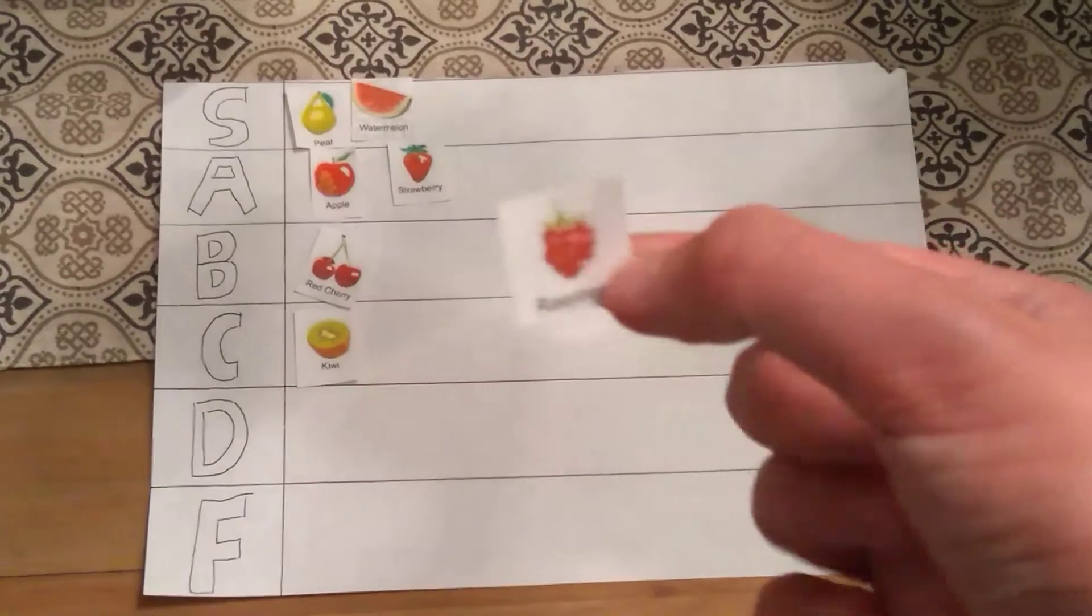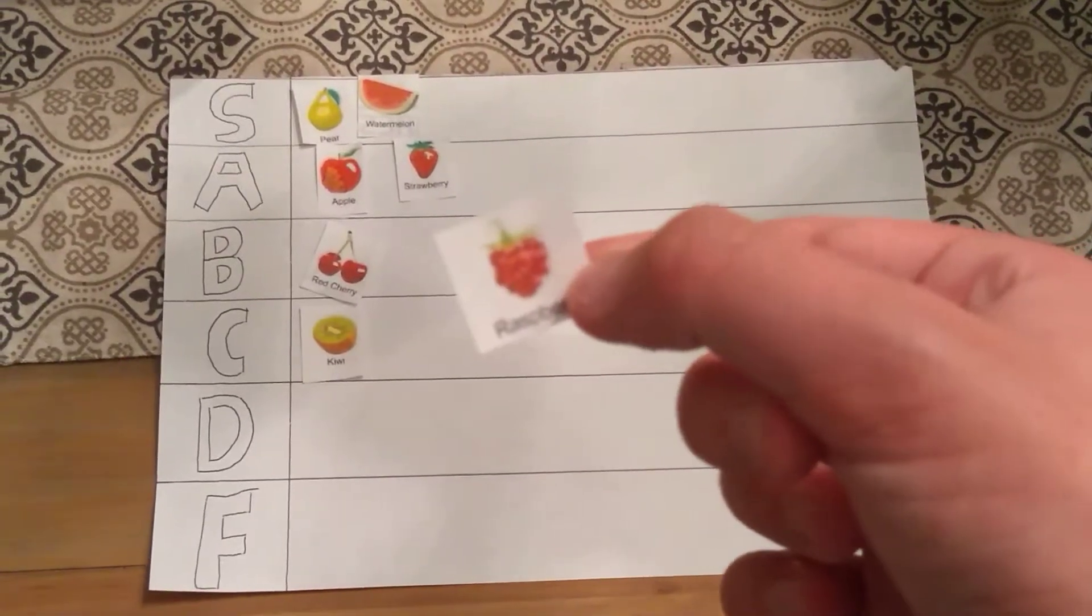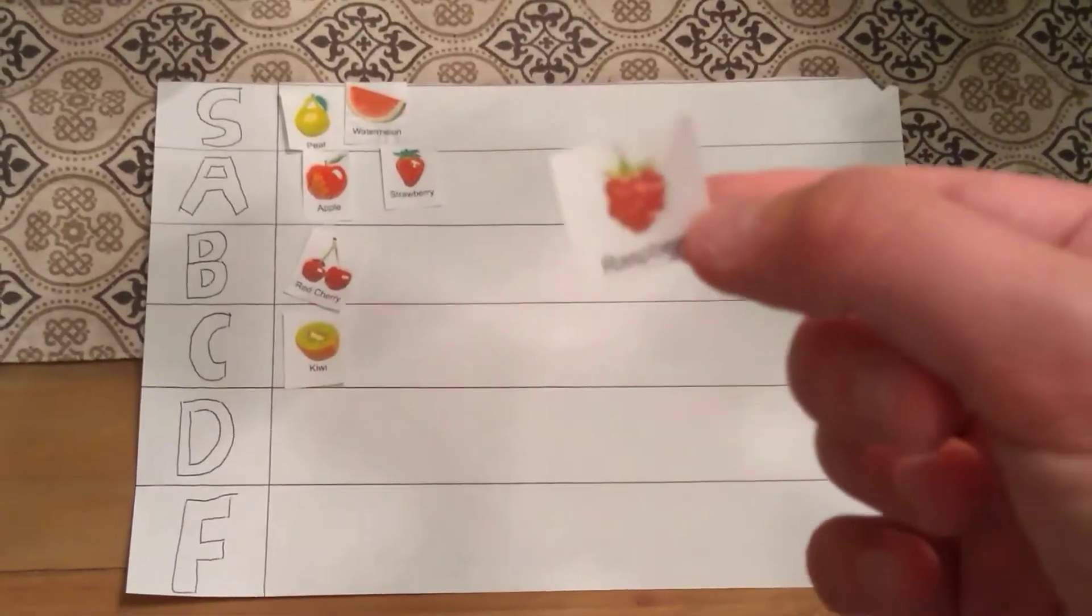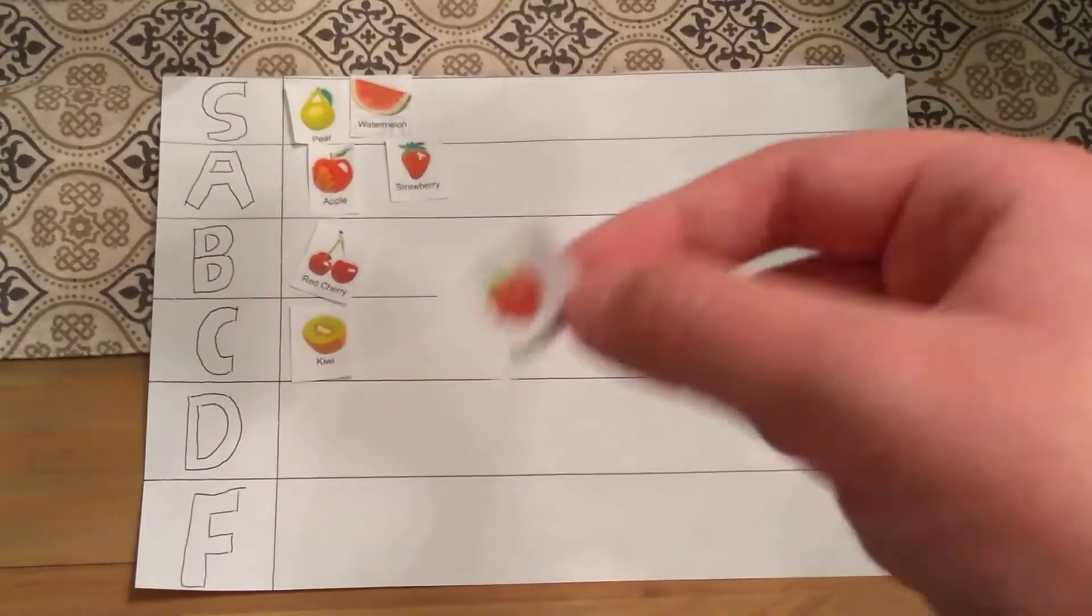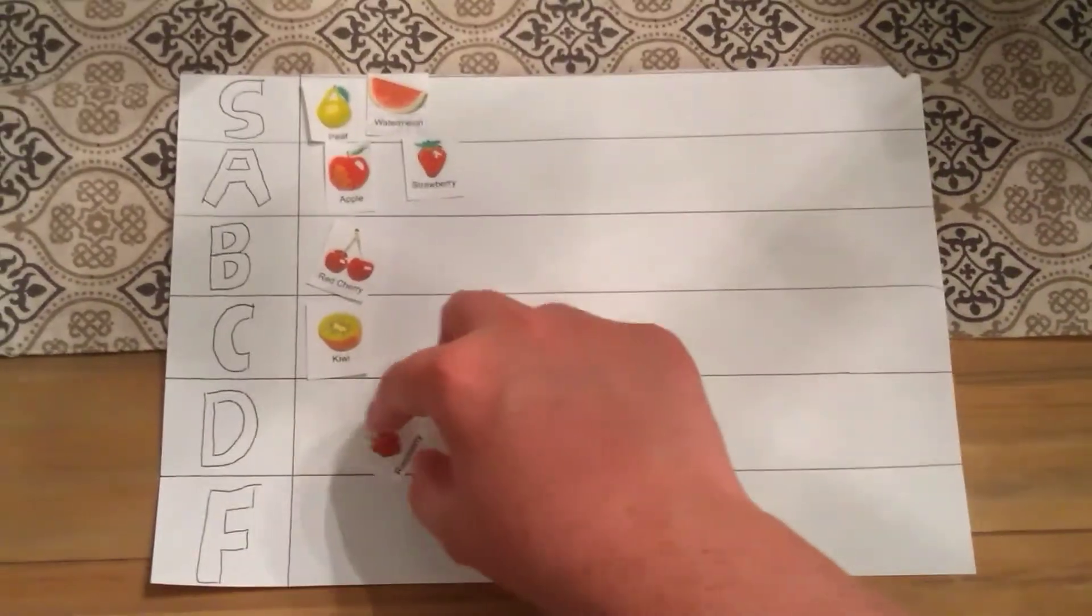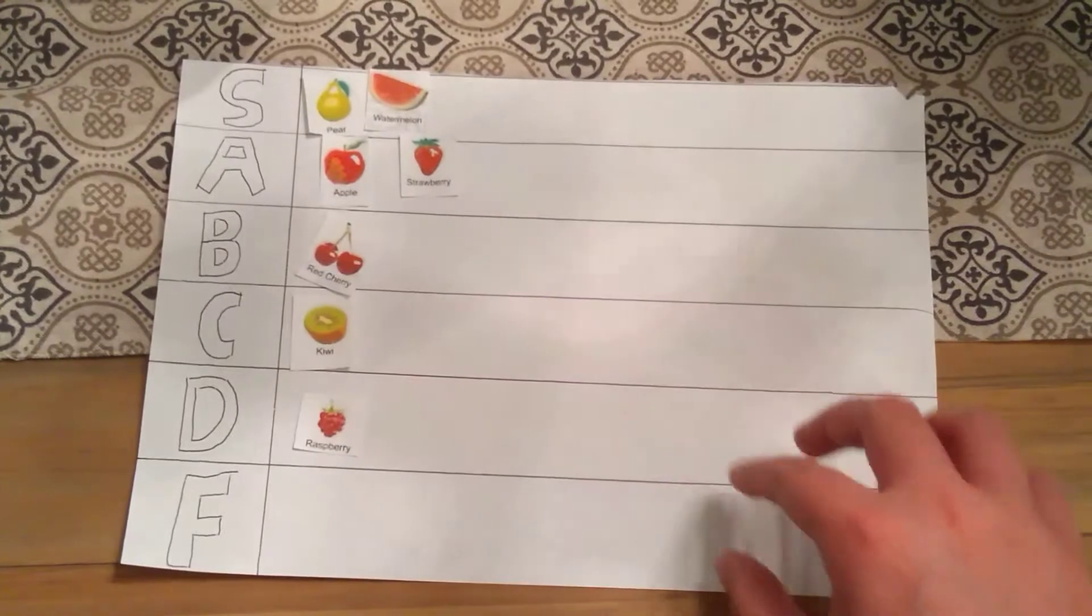Next up, we have raspberries. Which you might think, oh, Josiah, you might like raspberries, since you like strawberries and cherries. Heck no. Raspberries are terrible. Which is why they're going in the D tier.